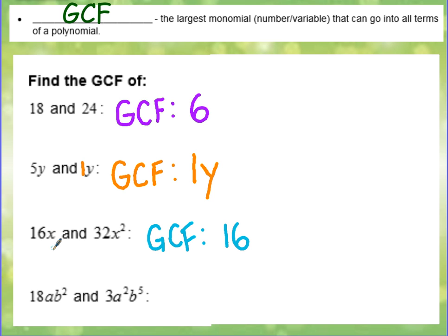Now, when we take a look at the variables here, we have x and x squared. Which means 16x has 1x. And x squared has 2x's. Well, if we had to decide how many they have in common, this one only has 1, and here's this one. So we would say that they have 1x in common. So the GCF of those two terms would be 16x.